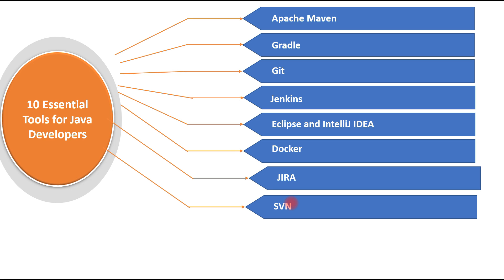Next is SVN (Subversion). In my eight to nine years of Java development, I've used SVN as a version control tool. It is a centralized version control system used to manage current and previous versions of files like source code and documentation — it acts like a time machine for developers. While Git is trending now, many large projects still run on SVN, and some IT companies still prefer it.